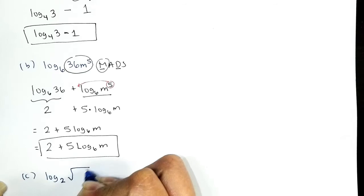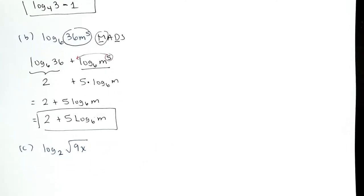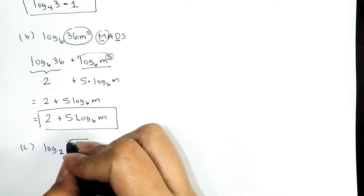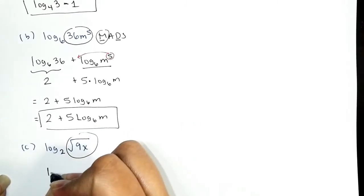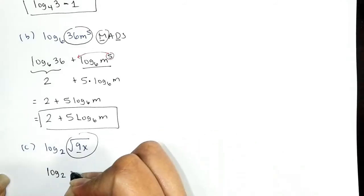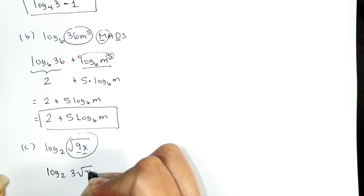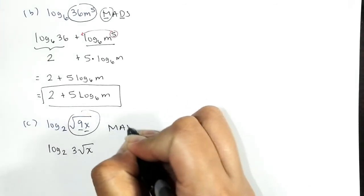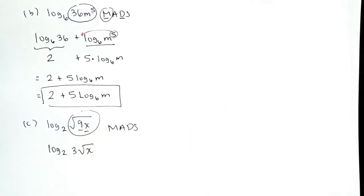Problem C: log base 2 of the square root of 9x. Before expanding, let's simplify the argument as much as possible. The square root of 9x: the square root of 9 is 3, and the square root of x stays as √x. So we have log base 2 of 3√x. The operation between 3 and √x is multiplication, so we expand as a sum of logs.